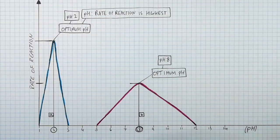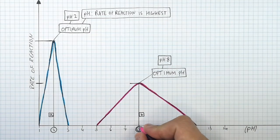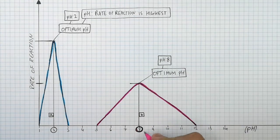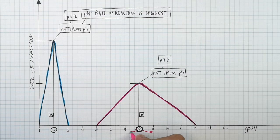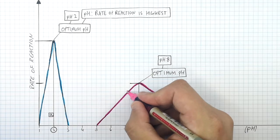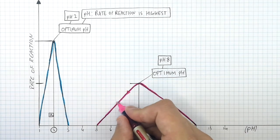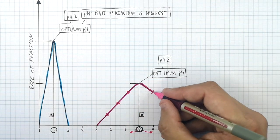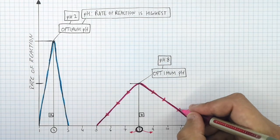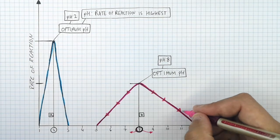Enzyme B's optimum pH is pH8. This is where the rate of reaction is at its highest. If you increase or decrease the pH above or below pH8, then the rate of reaction will decrease. So the rate of reaction decreases above or below pH8 for enzyme B.